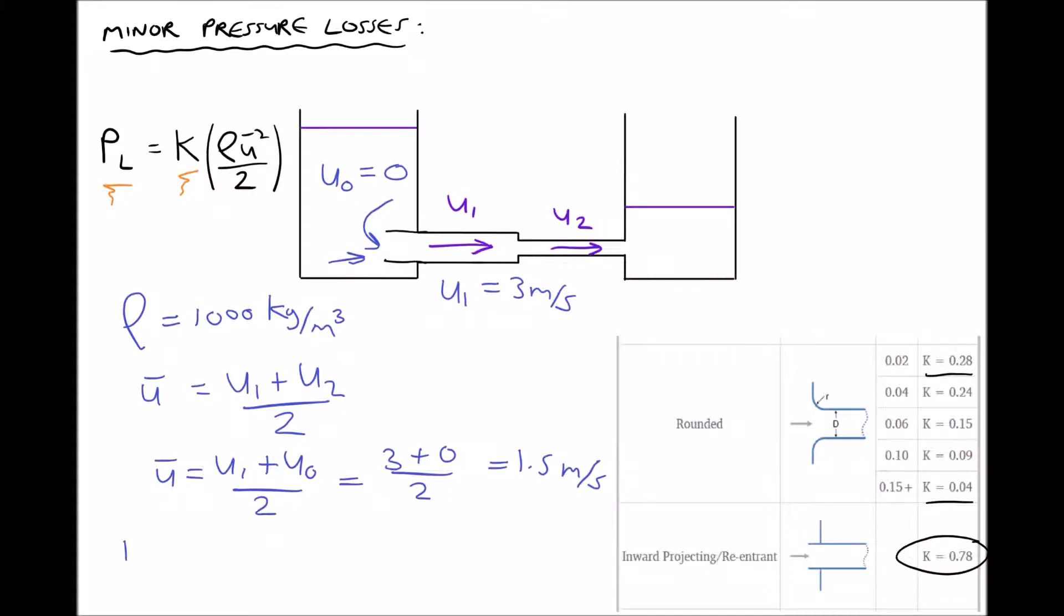So with that being said, we can calculate our pressure loss. Our pressure loss is K, and from our table we know that K for an inward projecting pipe is 0.78. In the brackets we have our density 1000 times ū bar squared, 1.5 squared, divided by 2, giving us a pressure loss equal to 878 pascals. So we're dealing with relatively small pressure losses here.